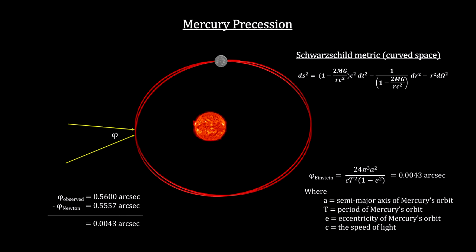It's the curved space around the Sun, defined by the Schwarzschild metric, that produces this small additional precession on each orbit. Here's what it looks like.